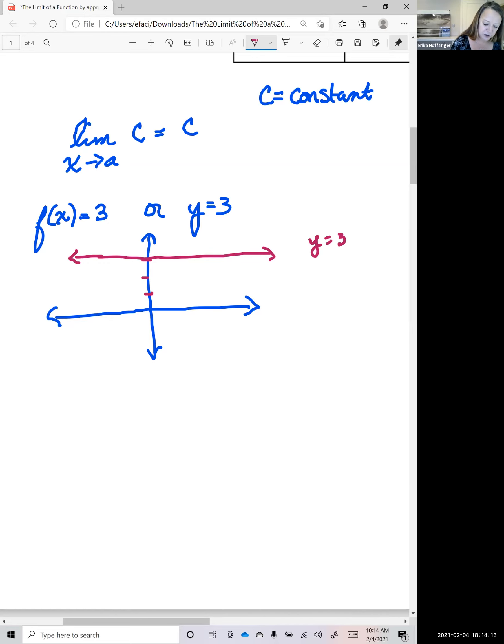And so if we choose any value of X, so we're just arbitrarily called it A, so let's say A is here, and we were looking at what was happening as we get closer and closer to A on the left and the right, we really want to see what's happening to our Y value. Well, isn't that Y value staying the same anywhere on this line? It is. And so this is why we can say that the limit as X approaches some finite value A of a constant is always going to equal that constant.